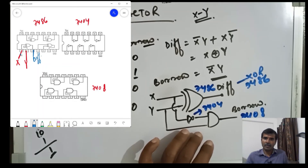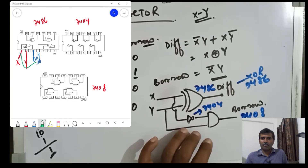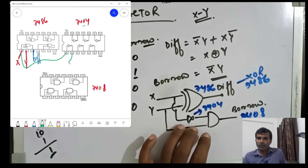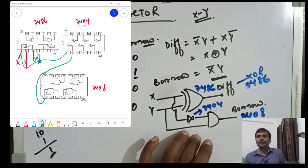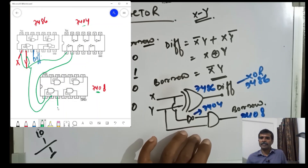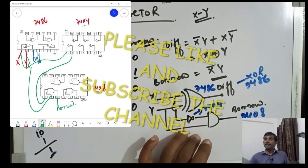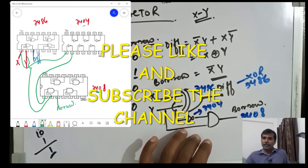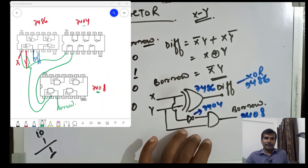For getting the borrow, we take the complement of X using IC 7404. The output from the NOT gate goes to the first gate of the IC 7408 AND gate. Connect Y to the other input of that AND gate, and at the output we get the borrow. This is the complete circuit for the half subtractor.